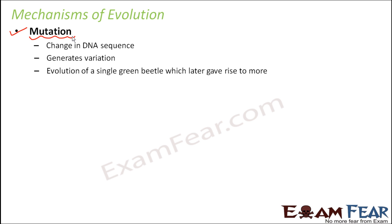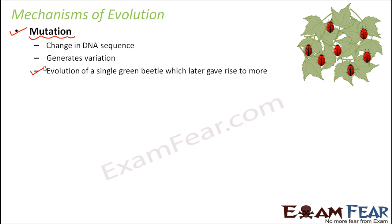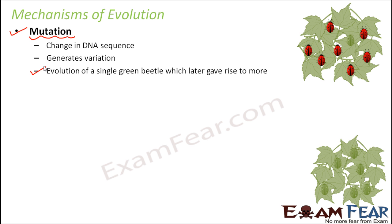Let us take an example: evolution of a single green beetle which later gives rise to more. Suppose this is a locality where we only have red beetles. Now due to mutation, one green beetle is formed — maybe there was some change in the DNA sequence because of which the colour of this beetle is not red but green. Just one beetle is formed as a result of mutation, but later, over a period of time, since the green beetle gets some survival advantage and when it reproduces there are chances it will form more green beetles, that one green beetle can eventually form many more. That is how a small mutation led to evolution.